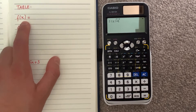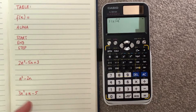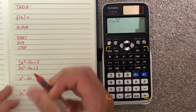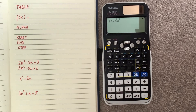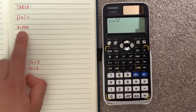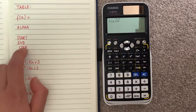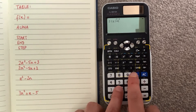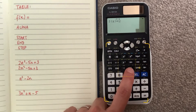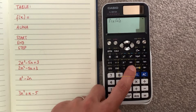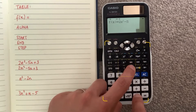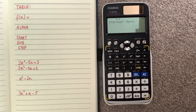Once in table mode, it gives you the option of f(x) — it just wants you to type in the function. My function is in terms of n, but I need to type it in terms of x because that's what the calculator understands. I'll use the alpha button to get x. I'm typing in 2x squared minus 5x plus 3: press 2, then alpha and x for the x, then square it, minus 5, alpha x, plus 3.